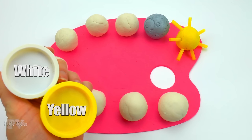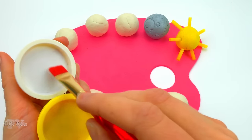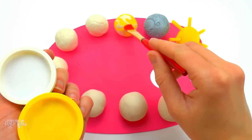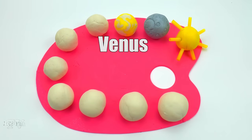Yellow. Venus. Venus is the second planet of the solar system.